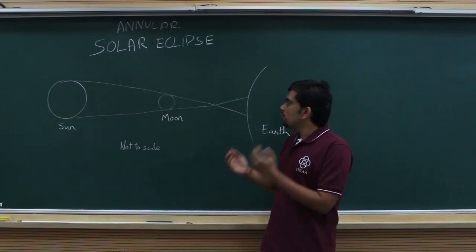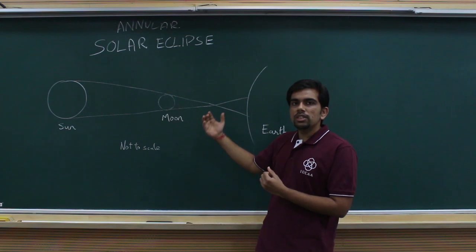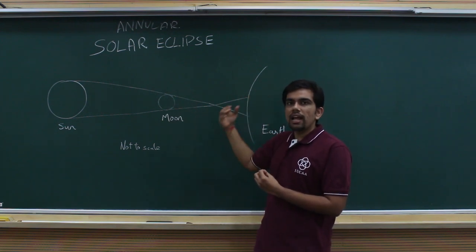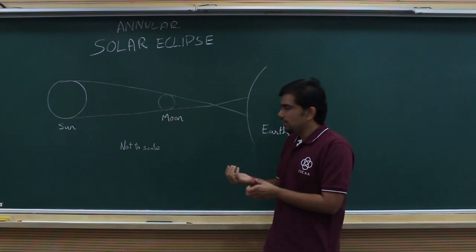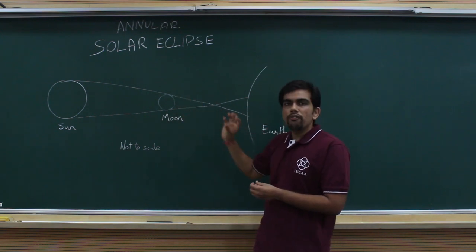This difference is the difference between total and annular eclipses. In a total eclipse, you see complete blocking of the Sun, while in an annular eclipse, which is generally what we see, the moon is slightly smaller than the Sun and thus cannot block it fully.